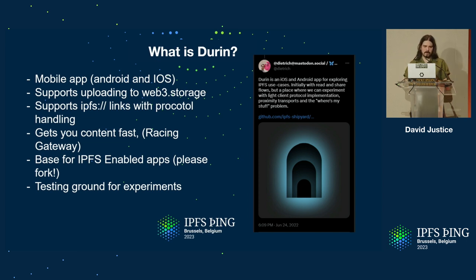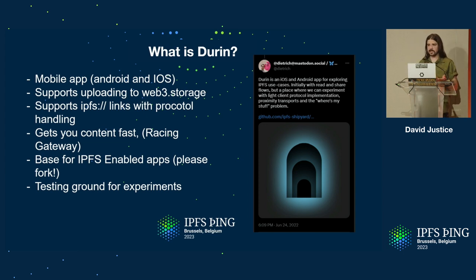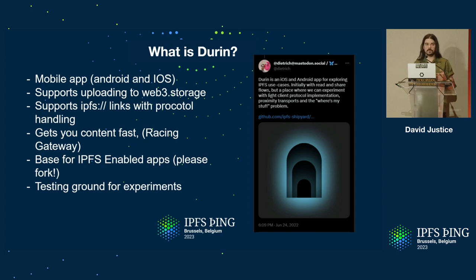It's an Android and iOS app. We support uploading and IPFS colon slash slash links with protocol handling. We're going to convert those to HTTPS for sharing — really simple stuff we were already doing in Companion. We try to get your content as fast as possible on mobile using basically a racing or caching gateway. We're really thinking of this as a base for IPFS-enabled apps — a very simple base — and we want to make it friendly enough, document it, and put tutorials together so people can fork this and start building off of it. It's also a testing ground for experimental things we can try on mobile.